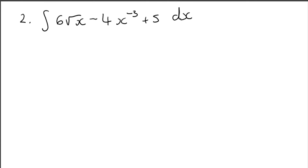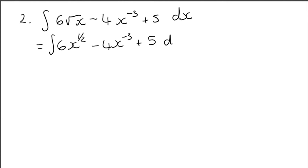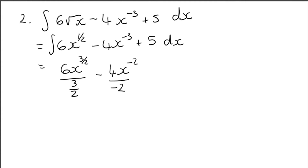Question 2: integrate 6√x - 4x⁻³ + 5 with respect to x. Rewrite with fractional indices - you don't want anything on the denominator - so 6x^(1/2). Now integrate by adding one to the power and dividing by the new power. For the x^(1/2) term, the new power is 3/2. Dividing by a fraction, multiply up: 2 × 6 = 12.